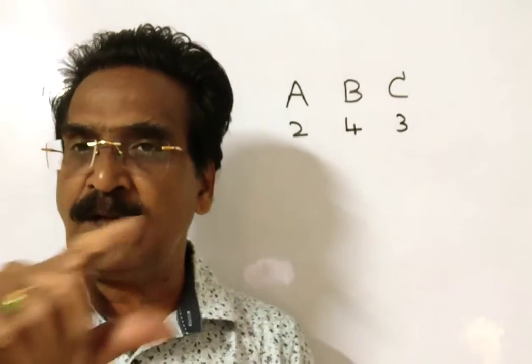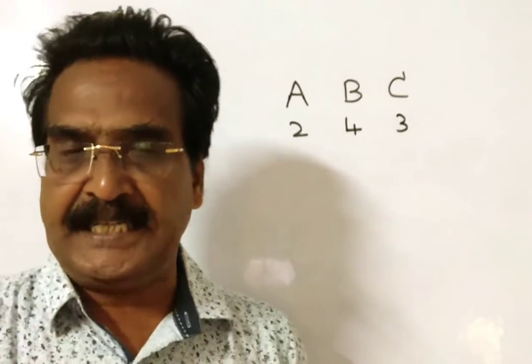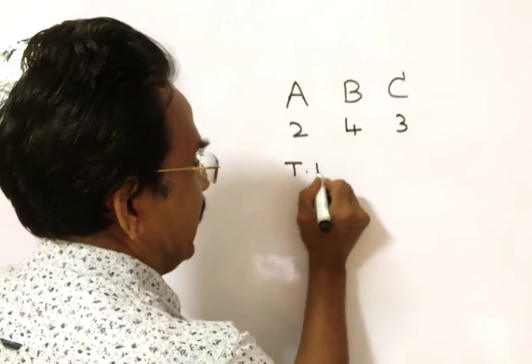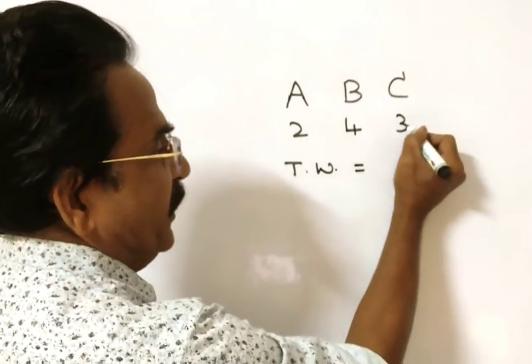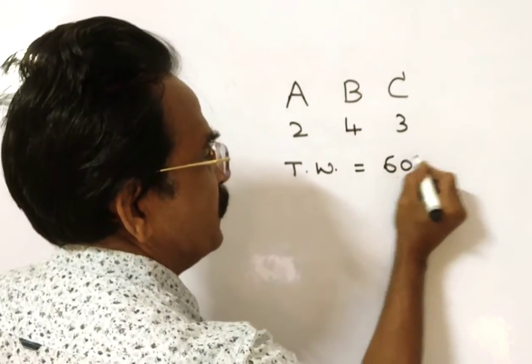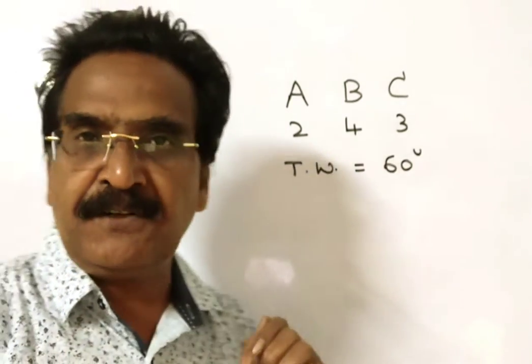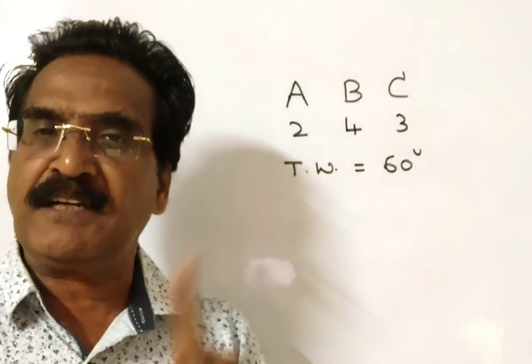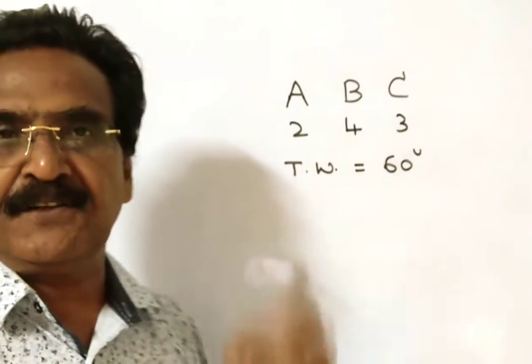Friends, it is given that C alone can complete the work in 20 days. So that means the total work must be 20 into 3, 60 units. C can do 3 units of work per day and completes the work in 20 days, means the total work 20 into 3, 60 units.